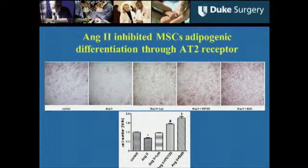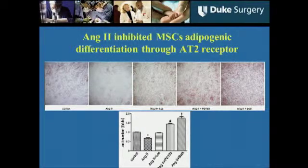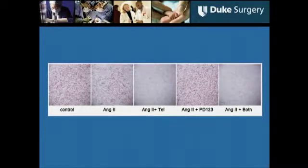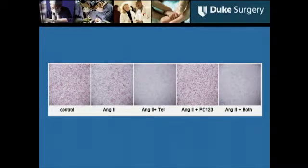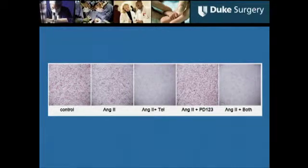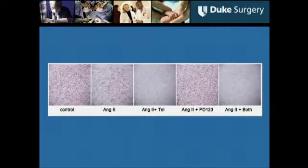This indicates that endogenous angiotensin II is a vigorous suppressor of mesenchymal stem cell differentiation. Unexpectedly, another receptor 1 blocker, telmisartan, dominantly enhanced angiotensin II's inhibitory effect, showing this inhibitory effect is receptor-independent.